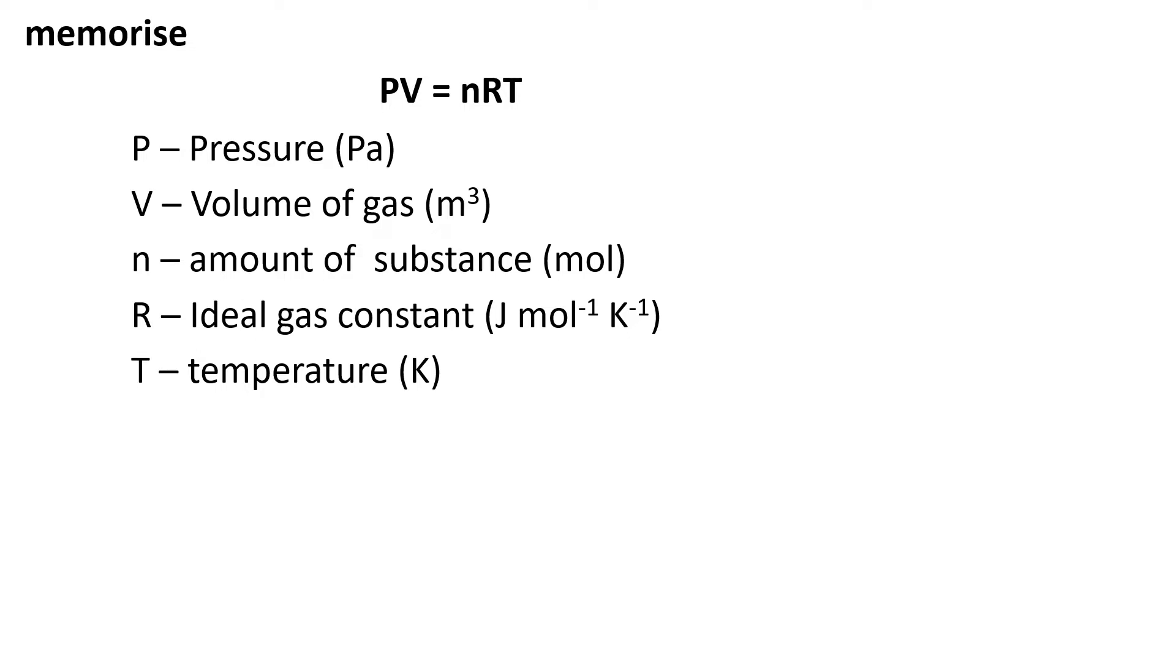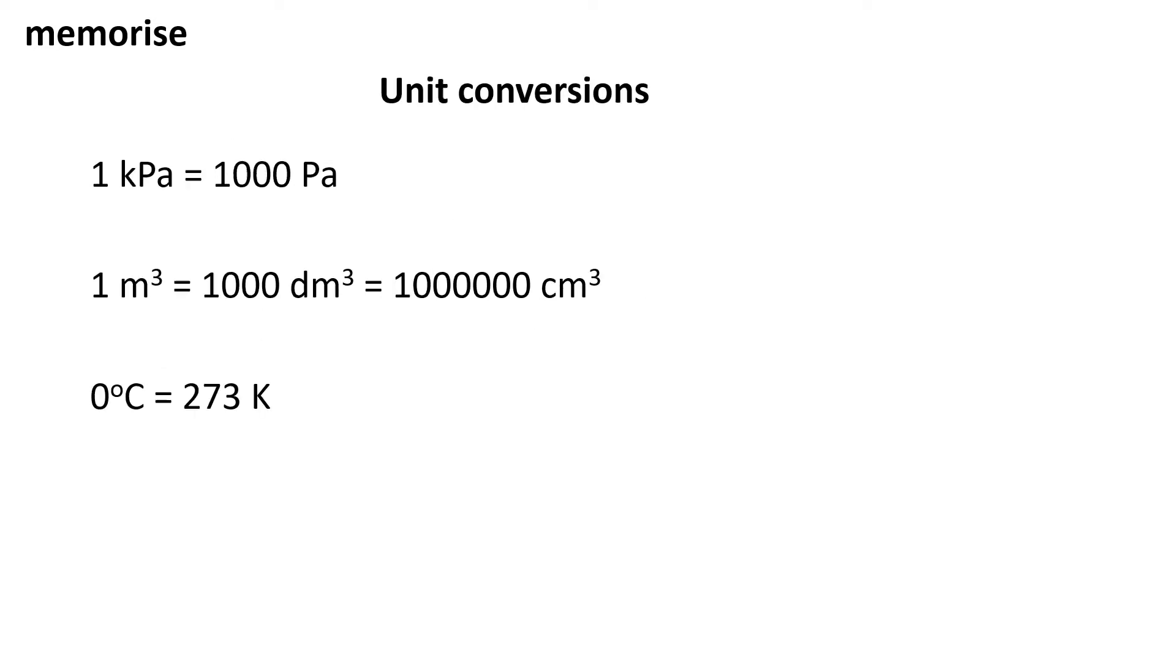For the ideal gas constant, it's simply a number you should know. Use what is on the data sheets - OCR tends to use 8.314, AQA tends to put the value they want to use for R in the question. Temperature has to be measured in Kelvin.